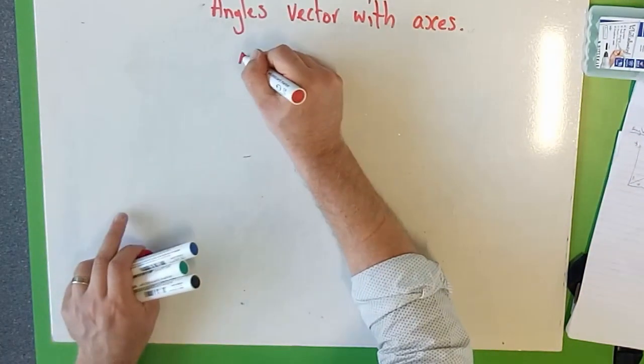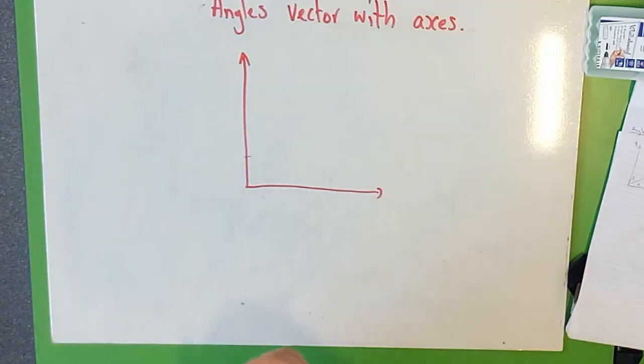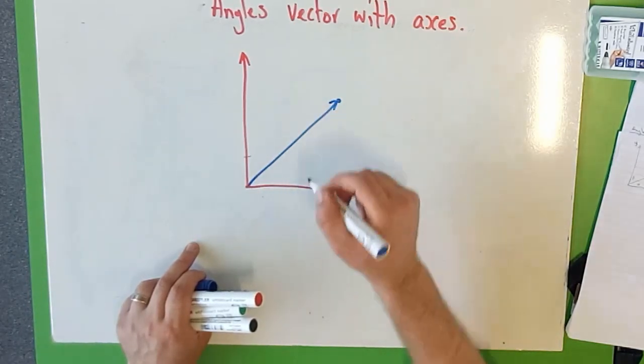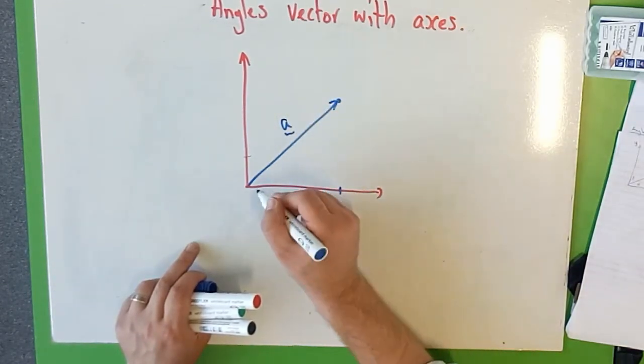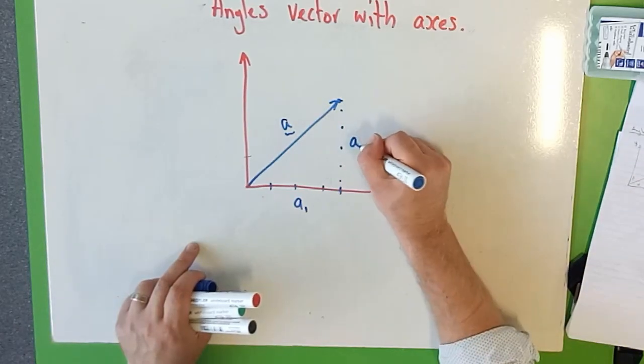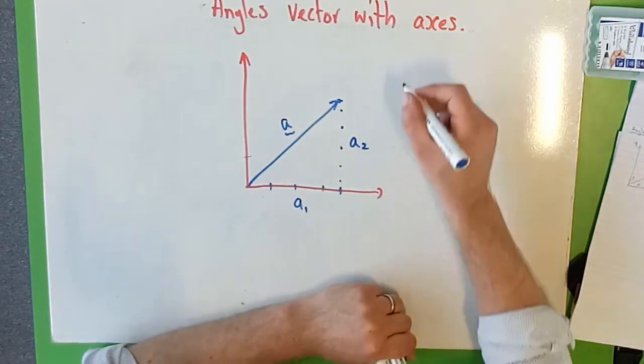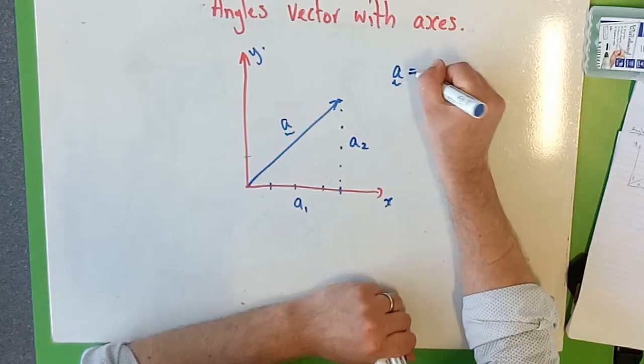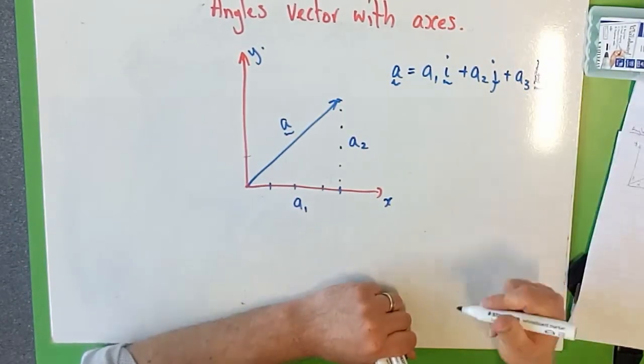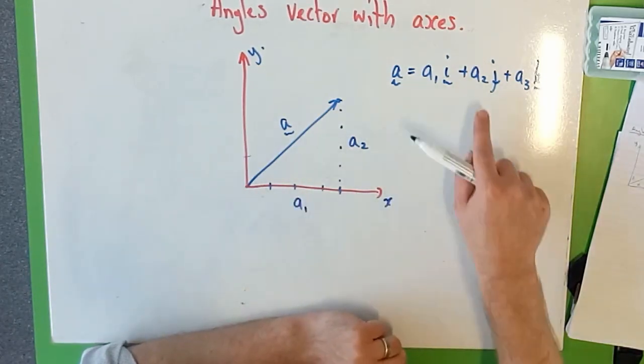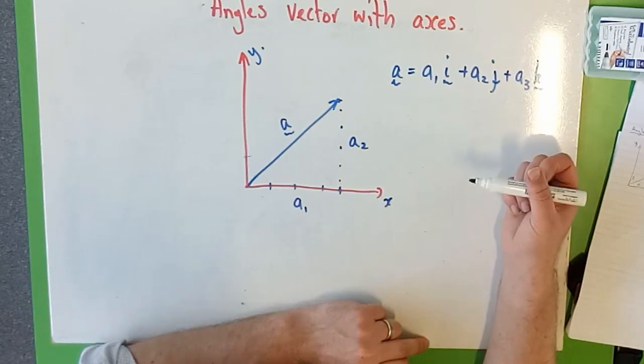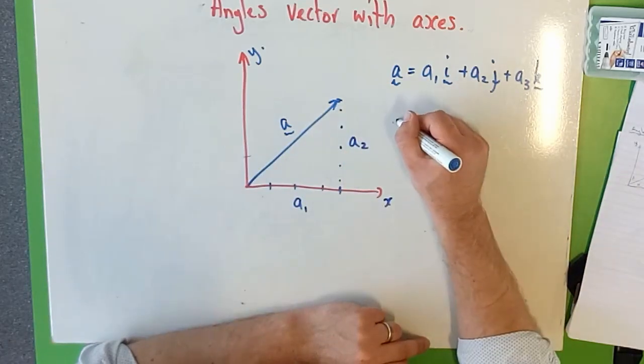I'm going to do this in just 2D so you can see really easily why this is. Just say I've got a vector here, we're going to call it vector a. How far do we go in the i direction? We're going to go a1 in the i direction, and how much we go up in the j direction, we're going to go a2. So vector a is equal to a1 times i plus a2j plus a3k. So this is just a1, how far you go along this way, a2, how far you go along this way, a3, how far you go in the z direction. And the combination of those makes up the vector a. Now the length of this vector here is the magnitude of a.